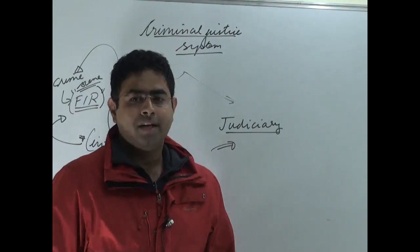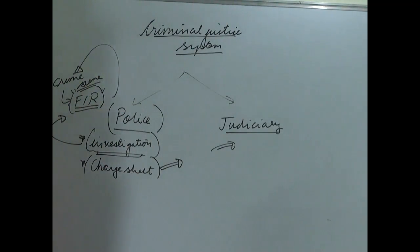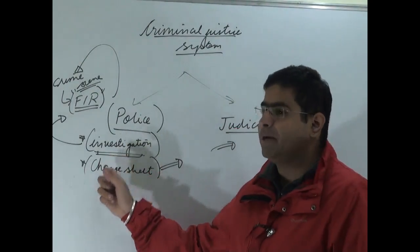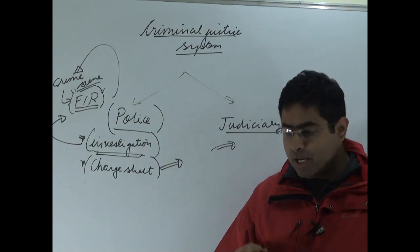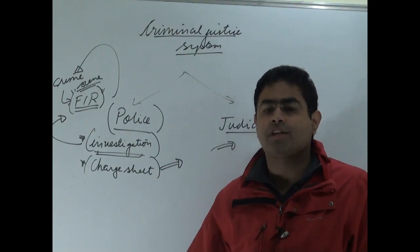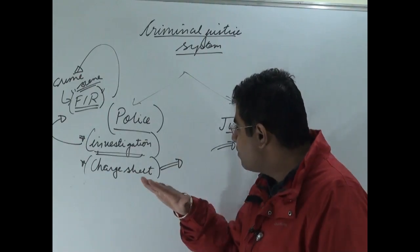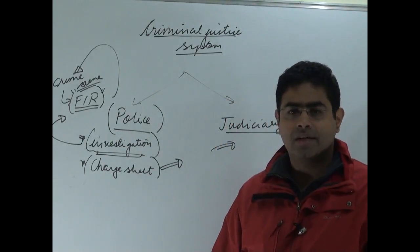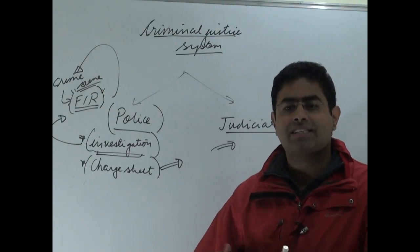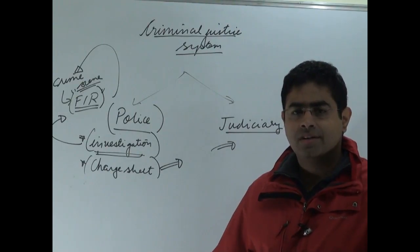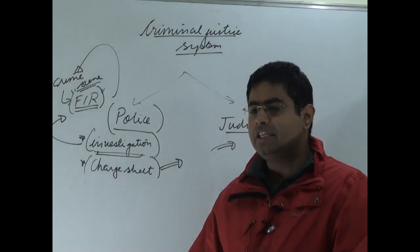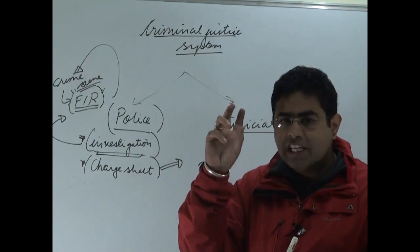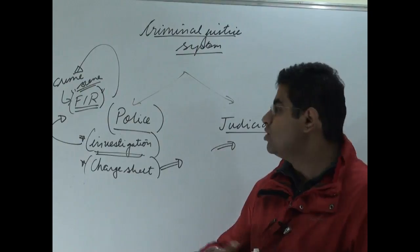Now we need to understand the lacunas in the criminal justice system. The basic lacuna is in the form of lethargy — the lethargic way in which investigation is done by the police. Indian police don't have access to state-of-the-art technology and forensic gadgets. If you want to investigate a crime scene you must have access to the latest technology in forensic science, distinct skills, knowledge to preserve the scene of crime, knowledge about ballistics, and specialized knowledge in the domain of crime.